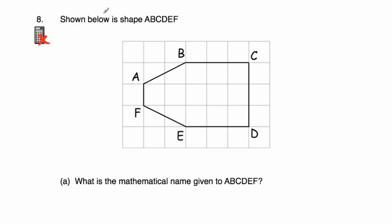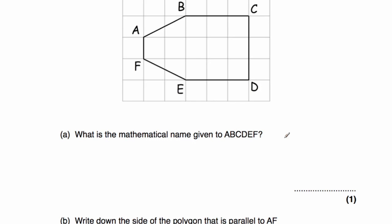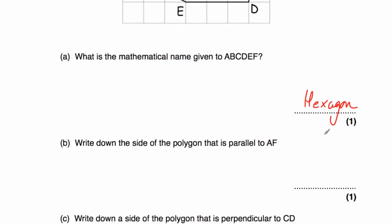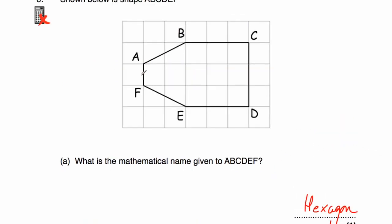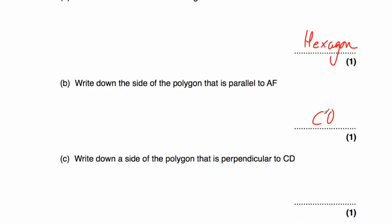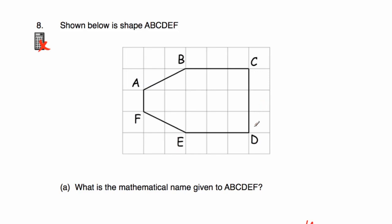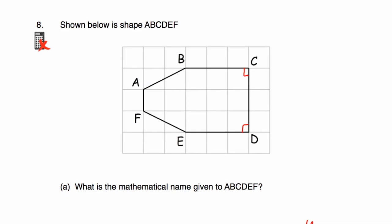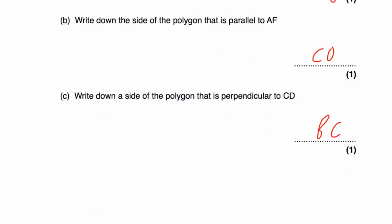Question number eight: we've got a shape ABCDEF on a grid. Because it has six letters — one, two, three, four, five, six sides — its mathematical name is hexagon. Part B: write down the side parallel to AF. That would be CD, they are parallel. Part C: write down the side perpendicular to CD. That could be BC, or it could be ED. So BC.